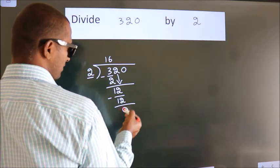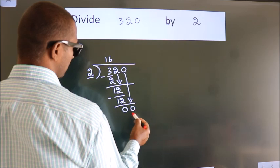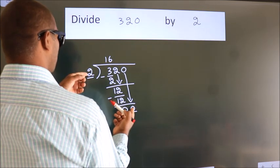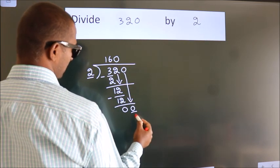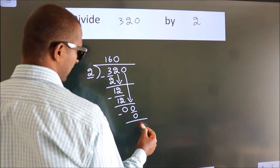After this, bring down the beside number. So, 0 down. So, 0. When do we get 0? In 2 table. 2 times 0. 0. Now, we subtract. We get 0.